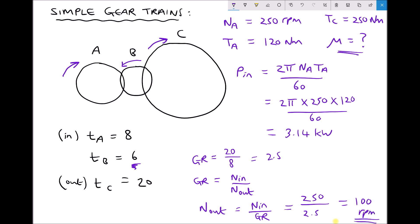As we would expect, gear C is rotating more slowly than gear A. In fact, gear A needs to turn 2.5 times in order to get one turn of gear C.